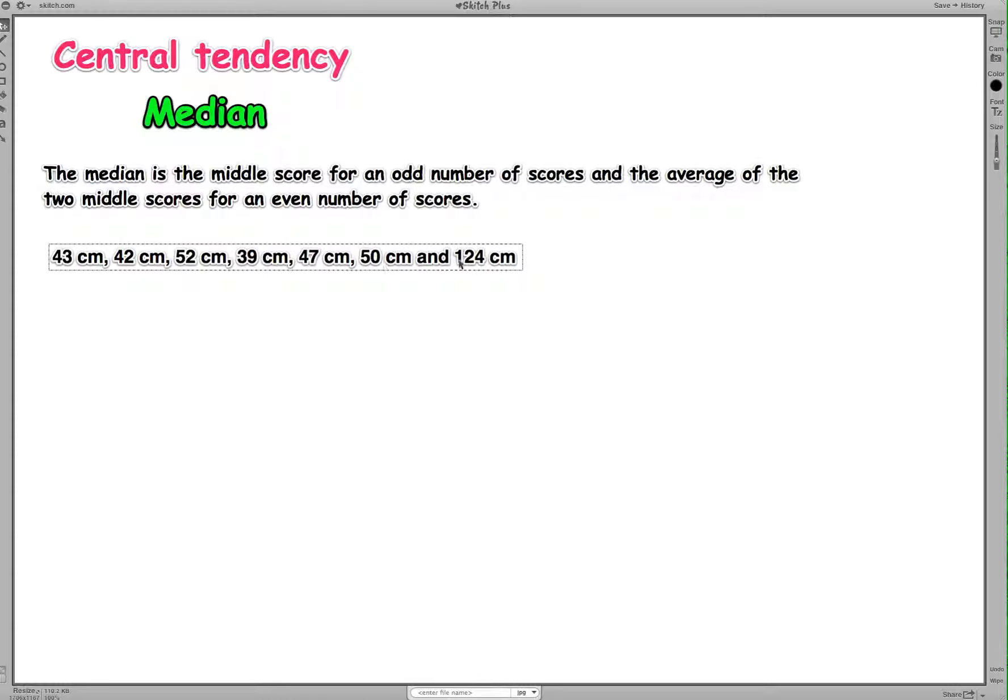So as you can see, we've got a group of fish that are about the same size, and then we've got one big fish that we caught that is almost twice as big, or is definitely twice as big as the other fish. So let's quickly calculate the mean of these fish sizes here, and then we'll see what it gives us. So remember, to calculate the mean, we need to get the sum of the scores, 43 plus 42 plus 52 plus 39 plus 47 plus 50, and then we add our whopping fish at the end, 124.